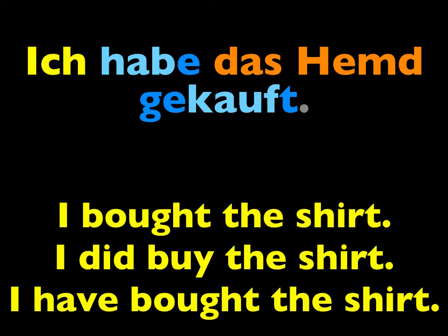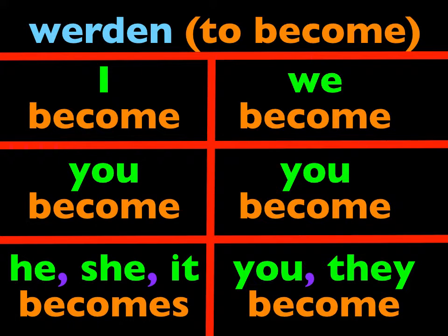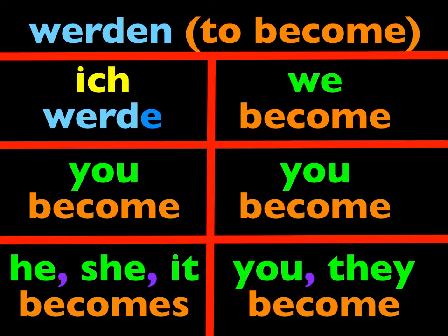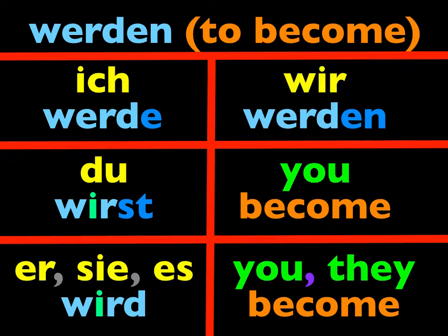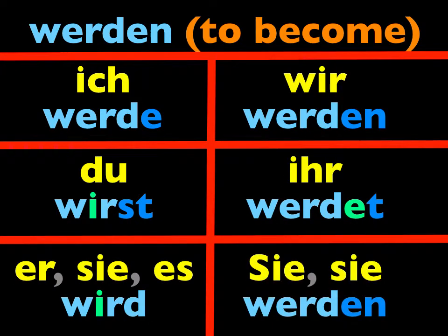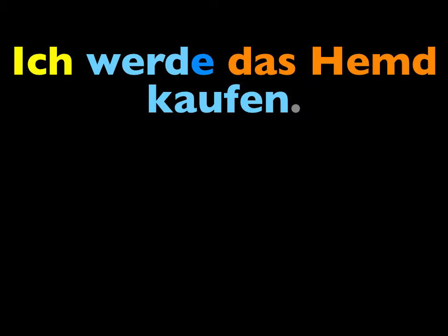We also learned the future tense. To form it, we need the verb werden. It means 'to become' by itself, but with another verb in its infinitive form, it means 'I will do something.' Werden is conjugated this way: ich werde, du wirst, er wird, wir werden, ihr werdet, und sie werden. For example, ich werde das Hemd kaufen. Notice the other verb — in this case kaufen — goes at the end of the sentence, or at the end of the clause if there's a comma.